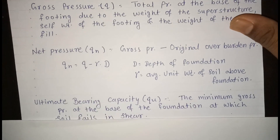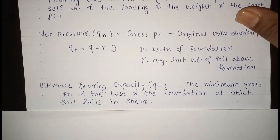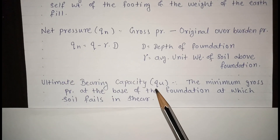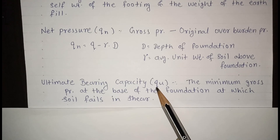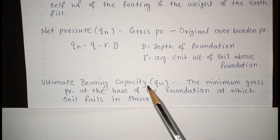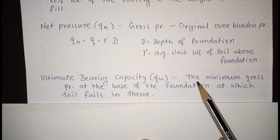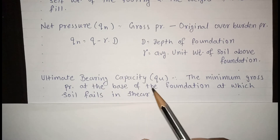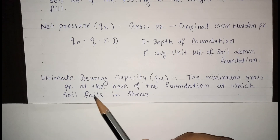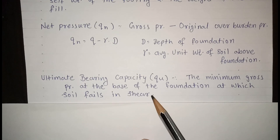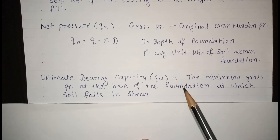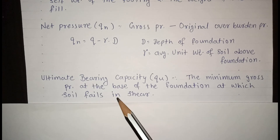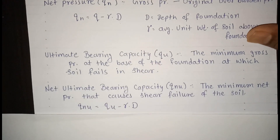The next definition is ultimate bearing capacity — very important. Ultimate bearing capacity QU is the minimum gross pressure at the base of the foundation at which the soil fails in shear. This is the maximum pressure at the base of the footing.